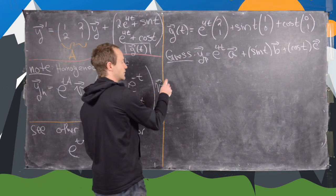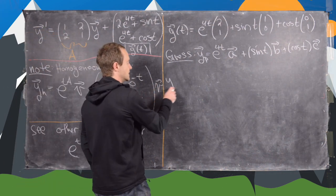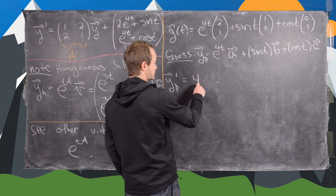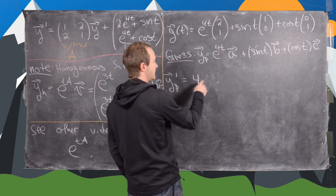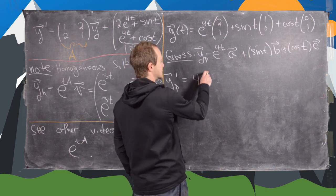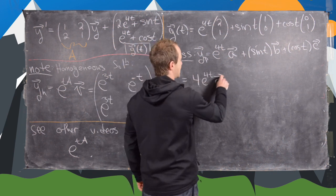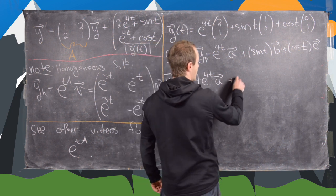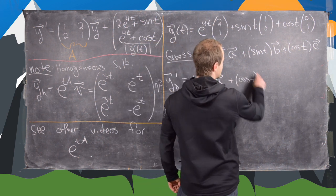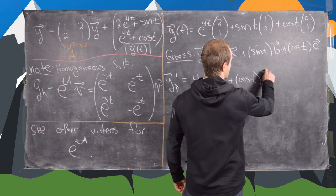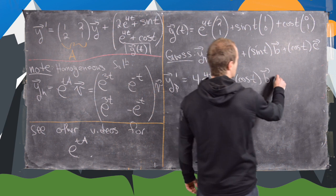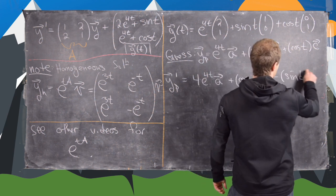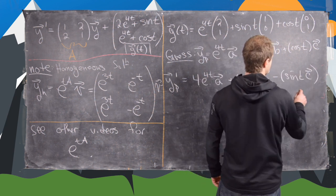Let's first take the derivative. So yp prime is going to be 4e to the 4t times vector a, plus cosine(t) times vector b, minus sine(t) times vector c.